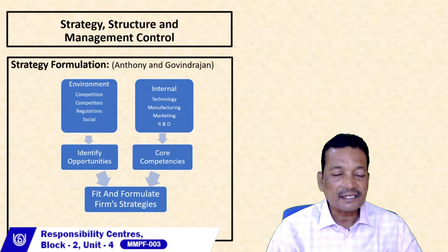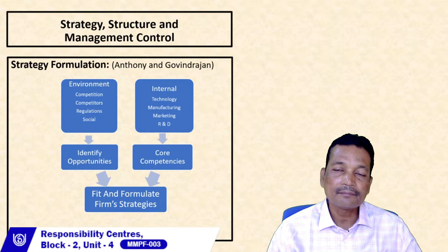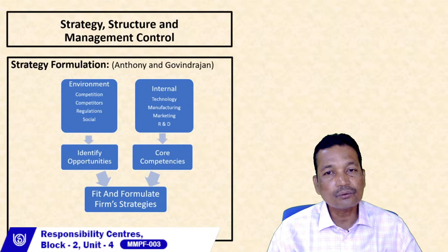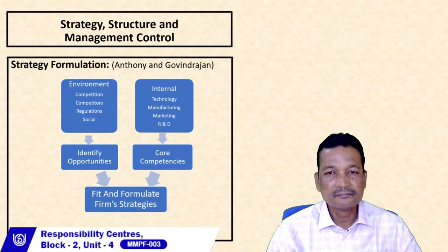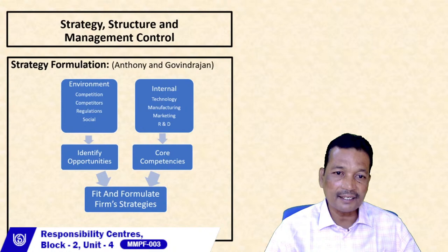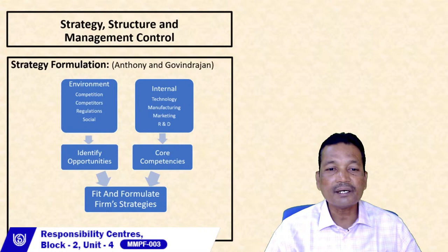Another internal factor is research and development. In this rapidly changing business world, people are looking day by day for products with new features, additional features, higher quality levels, and latest innovations. All these things are developed through the research and development cell. From the environment, we try to identify opportunities for our organization, and from internal factors, we try to extract what our core competencies are.